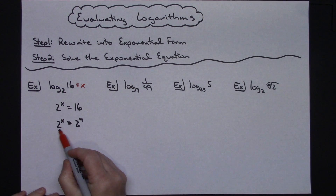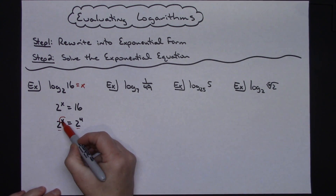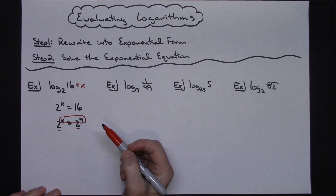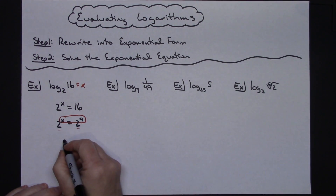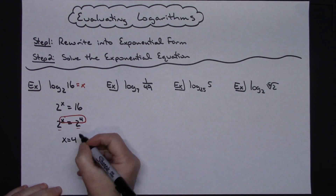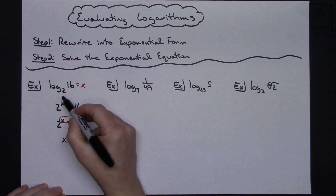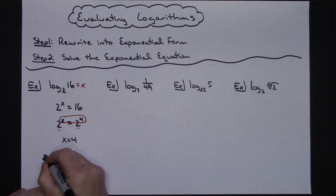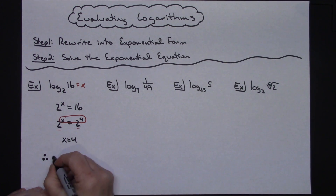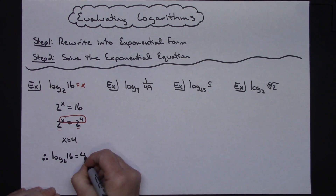Once you get like bases, you can set your exponents equal to each other. On this one it turns out to be very simple — it's just x equals 4. So coming back up, the log of 16 base 2 equals 4. I could write a therefore statement if I wanted to, but I've evaluated my log: log of 16 base 2 equals 4.